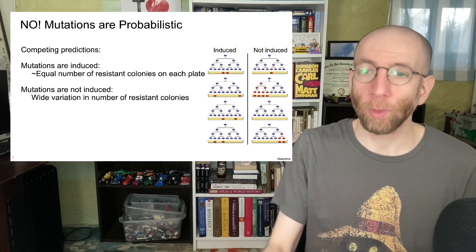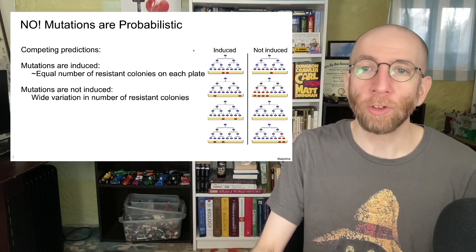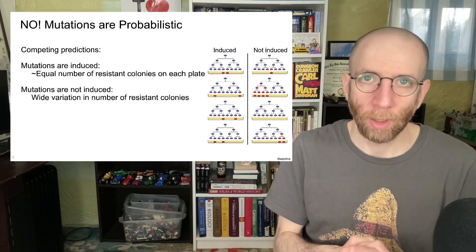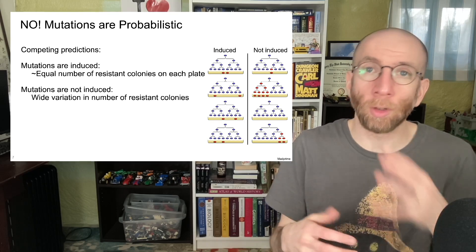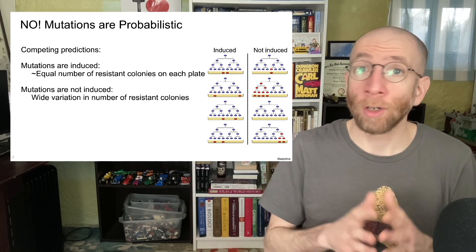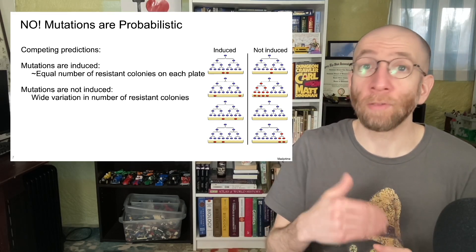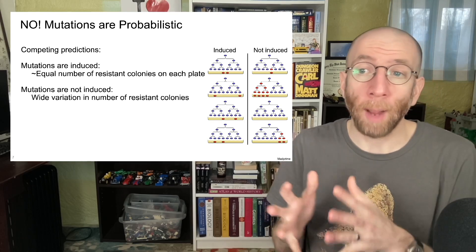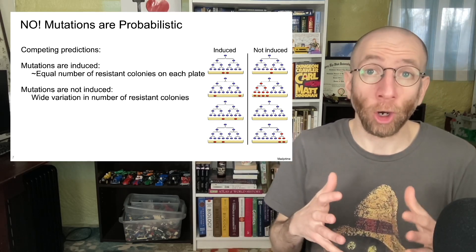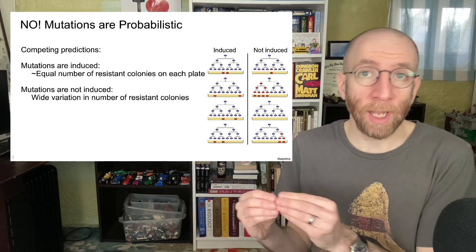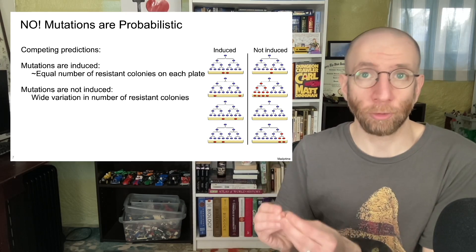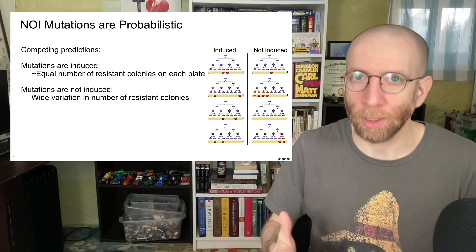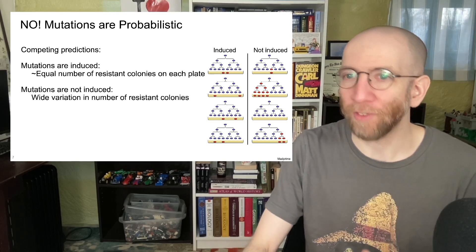If the mutations are induced — shown in the column on the left — we should see an approximately equal number of resistant colonies on each plate. The frequency of resistance should be approximately equal across all iterations of the experiment. If the mutations are not induced, then the mutations conferring resistance must have occurred somewhere in the brief evolutionary history of these bacterial lineages. Some populations will have a lot of resistance because the mutation occurred early; some might have very little because it occurred very late, or maybe not at all. So if the mutations are not induced, we expect wide variation in the frequency of resistance.